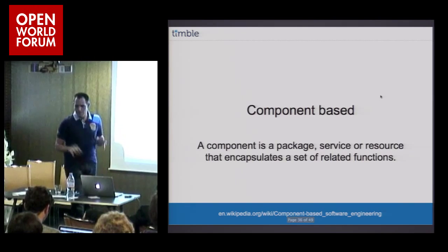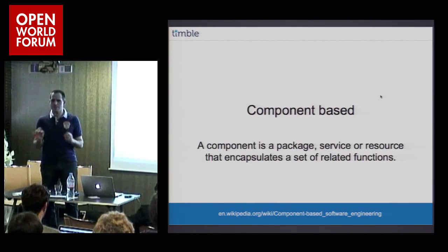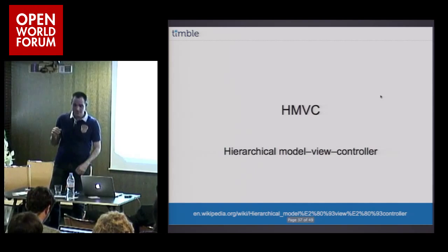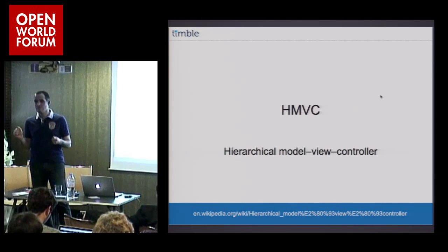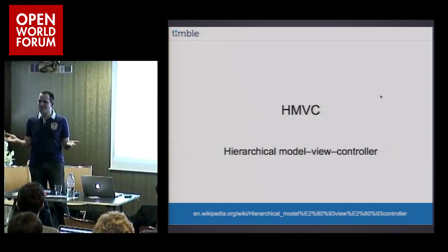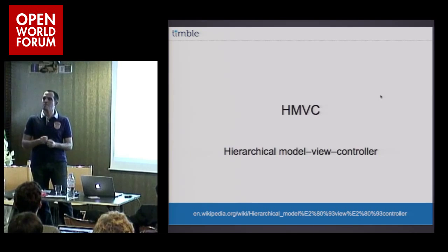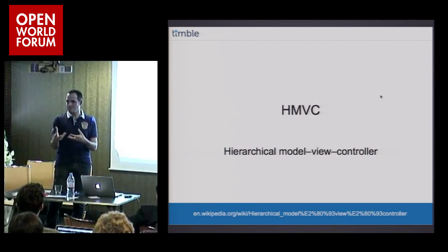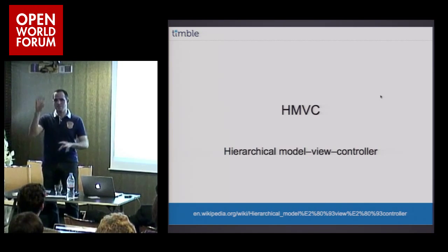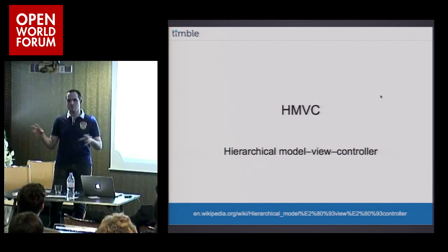Architecture: component-based. Everything is a component, everything can be reused and built upon. HMVC — Hierarchical Model View Controller. That means you can run multiple MVCs at the same time. It's a very powerful thing. When you have a component-based architecture, you can run multiple components during one request. Each component is basically built using MVC.